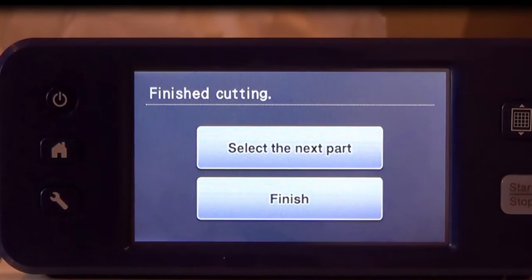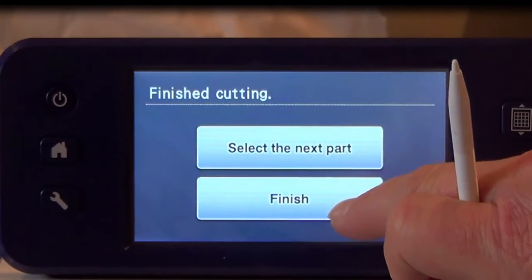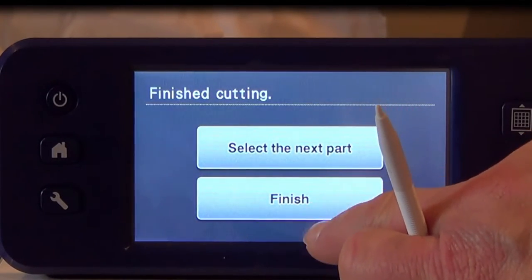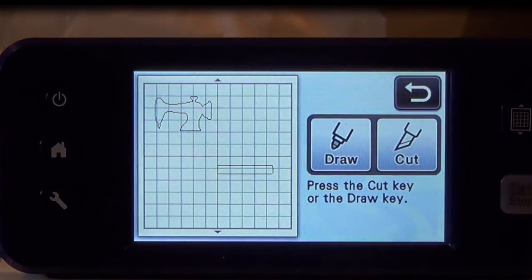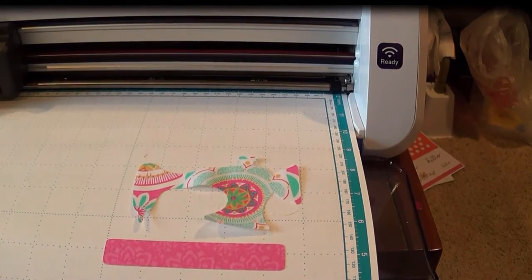Since we placed both of the pieces of the sewing machine on the screen at the same time, we may press Finish because we don't need to cut any more pieces. We'll be back at the Cut screen and you'll see that my pieces have been cut.